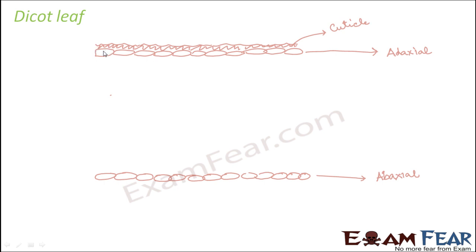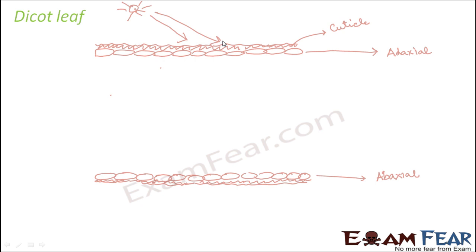The cuticle is thickest at the upper surface, and as you go down toward the lower surface, it becomes very thin. The reason is that sunlight is most intense on the upper surface, so more water will try to evaporate there. You need stronger protection to prevent water loss on surfaces more exposed to sunlight. As the intensity of sunlight decreases going downward, you don't need a very thick cuticle, so the thickness gradually decreases from the upper layer to the lower layers.